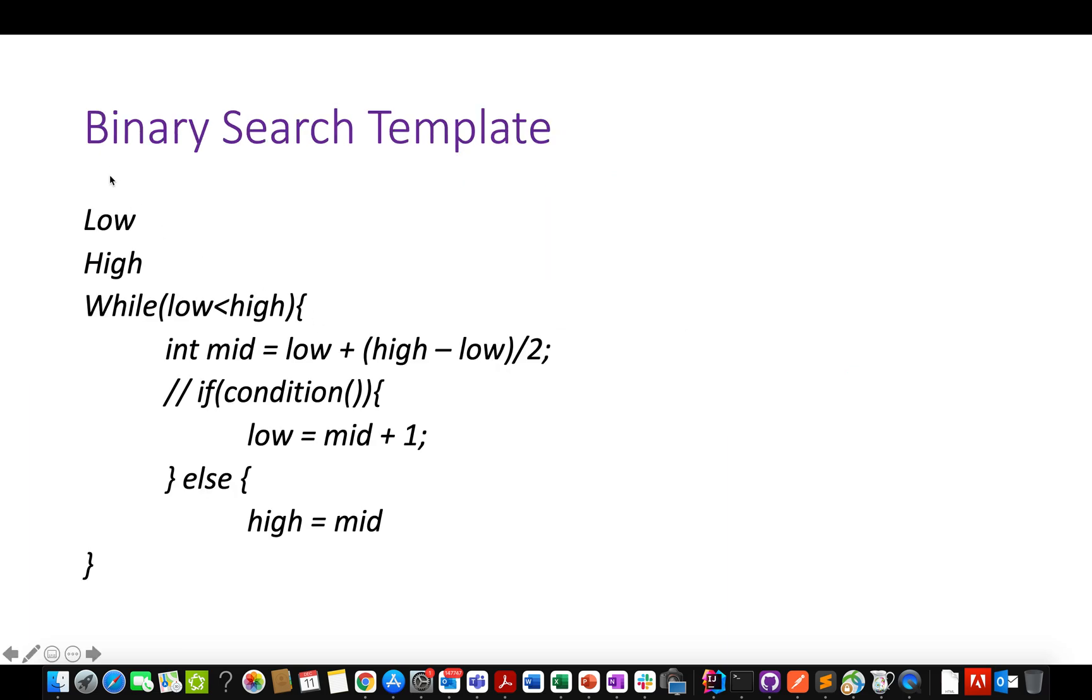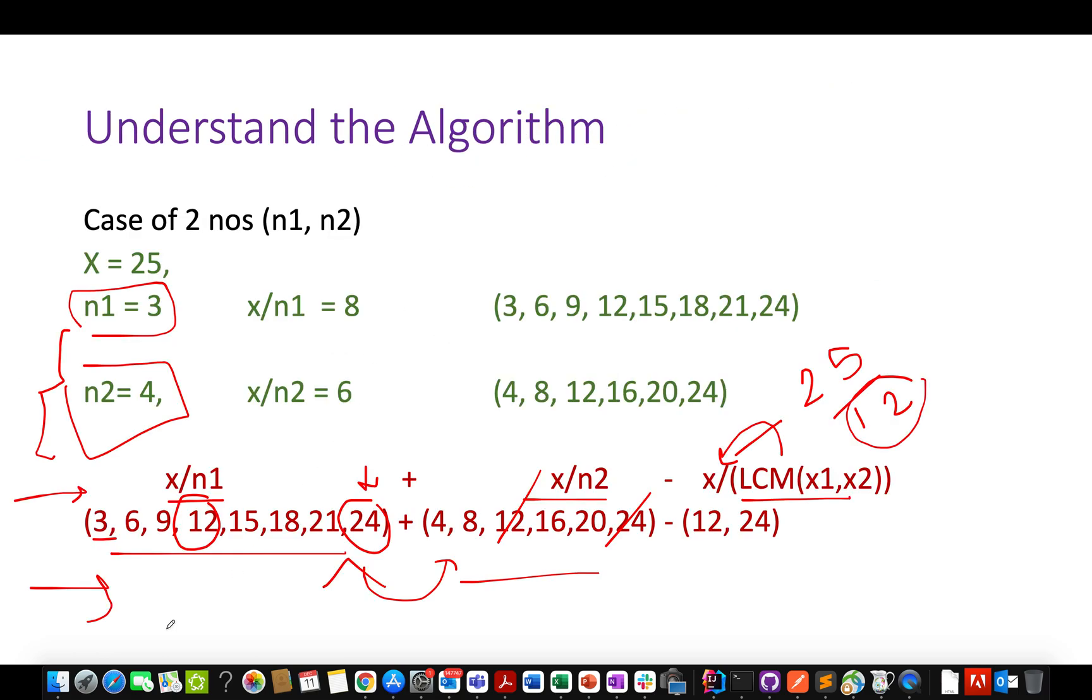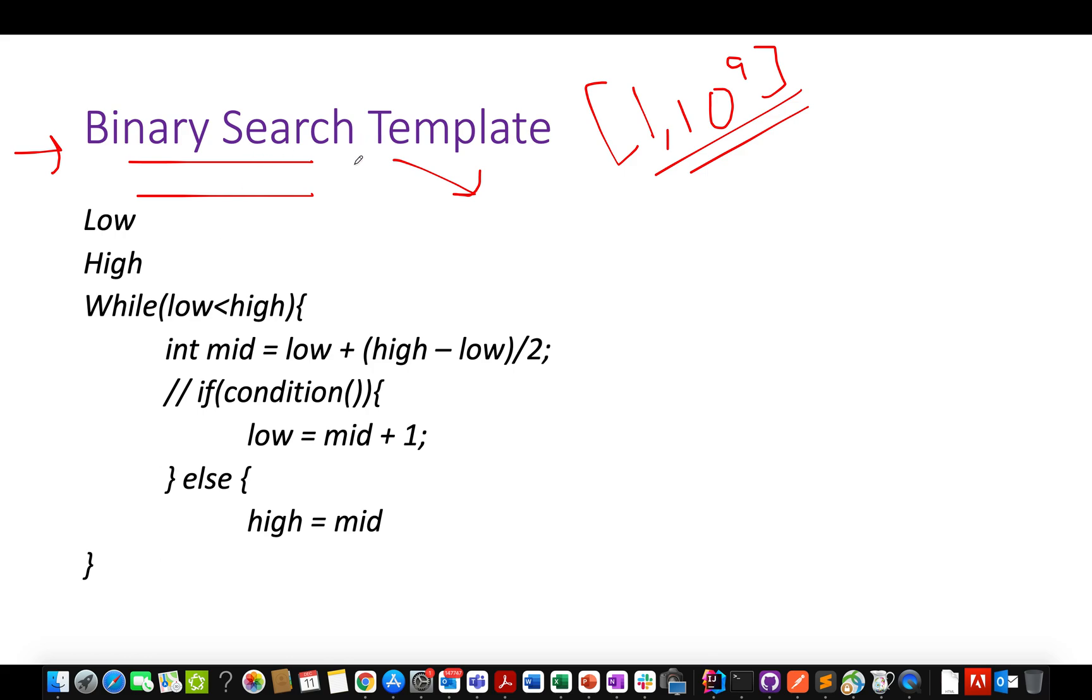Now we will apply binary search template to come up with the approach. In the input question it was specified that numbers lie in the range of 1 to 10 raised to 9. The limit is quite high and the naive approach of iterating over all elements will not work. So we have to use binary search. There are hints in the question pointing this out. We will create the series in increasing order fashion, meaning it's in ascending sorted order.